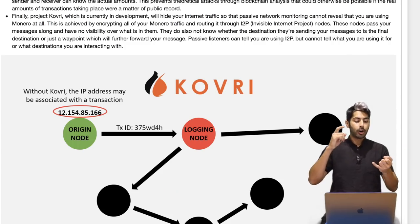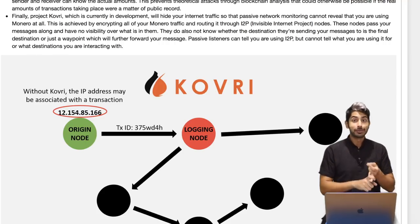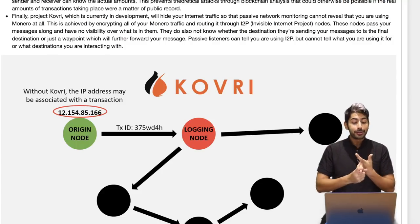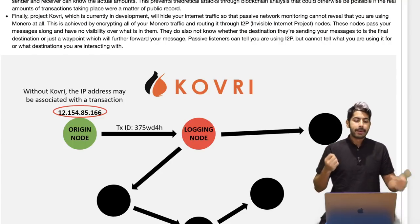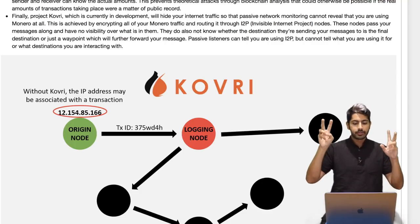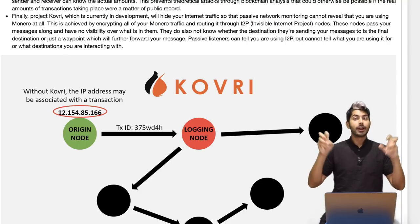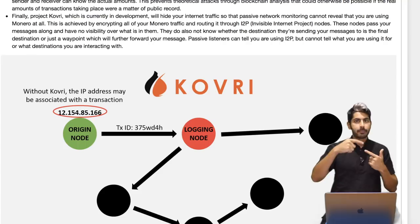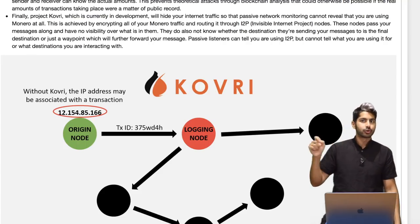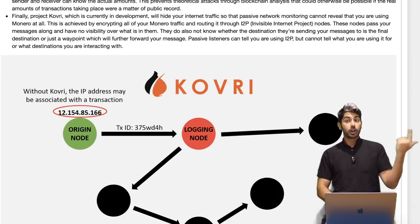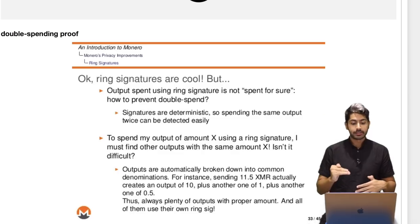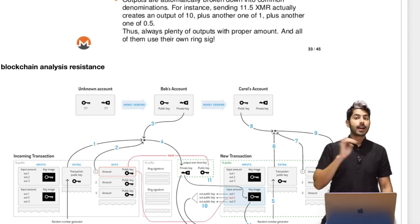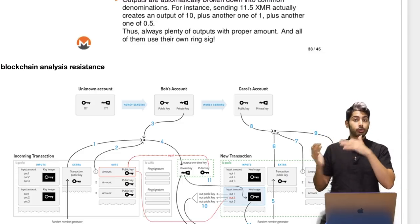There's also Kovri. We talked about how the sender is hidden using ring signatures, the amount using Ring CT, and the receiver using stealth addresses — but what about your location, your IP address? That's obfuscated using an I2P routing service called Kovri. It's kind of like Tor — your transaction is routed through all these different I2P nodes, Invisible Internet Project nodes, which pass your messages along with no visibility over what's in them. That's still under construction and getting better over time — you can view its progress on GitHub. It's double-spending proof because the whole blockchain has a copy of the key image, and it's the most blockchain-analysis-resistant cryptocurrency that currently exists.